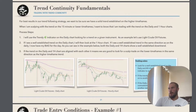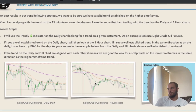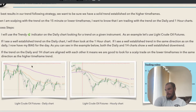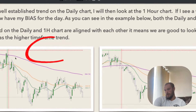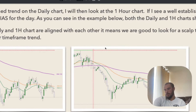I will use the Trendy indicator on the daily chart to look for a trend on any given instrument. In this example in the PDF, we're going to use light crude oil futures. If I see a well-established trend on the daily chart, I will then go look at the one-hour chart. If I see a well-established trend in the same direction on the daily, I now have my bias for the day. As you can see in the example, both the daily and the one-hour charts show a well-established downtrend. If the charts are aligned with each other, it means we are good to look for scalp trades on the lower time frames in the same direction as the higher time frame trends. You can tell by the arrows at the top of the screen and also the EMAs.